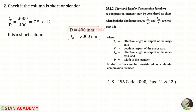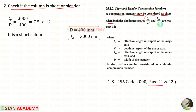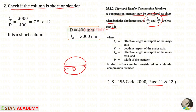Now we have to check if the column is short or slender. Opening the code book page 41: a compression member may be considered short when both slenderness ratios are less than 12. For a circular column there is only one dimension, the diameter D, so the slenderness ratio is LE/D = 3000/400 = 7.5, which is less than 12. So it is a short column.